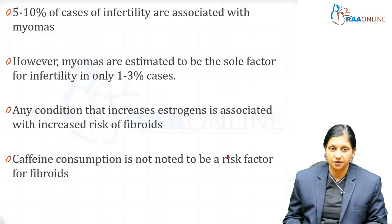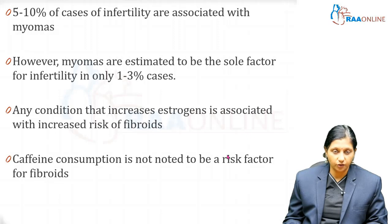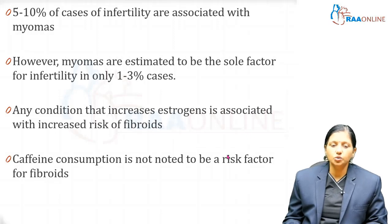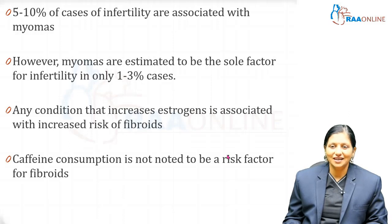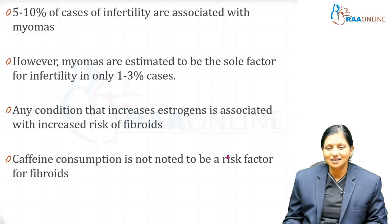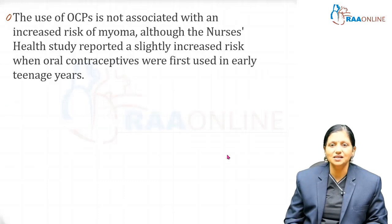Five to ten percent of infertility cases are associated with myomas; however, myomas are the sole factor for infertility in only one to three percent of cases. Any condition that increases estrogen is associated with increased risk of fibroids, and caffeine consumption is not a noted risk factor for fibroids.